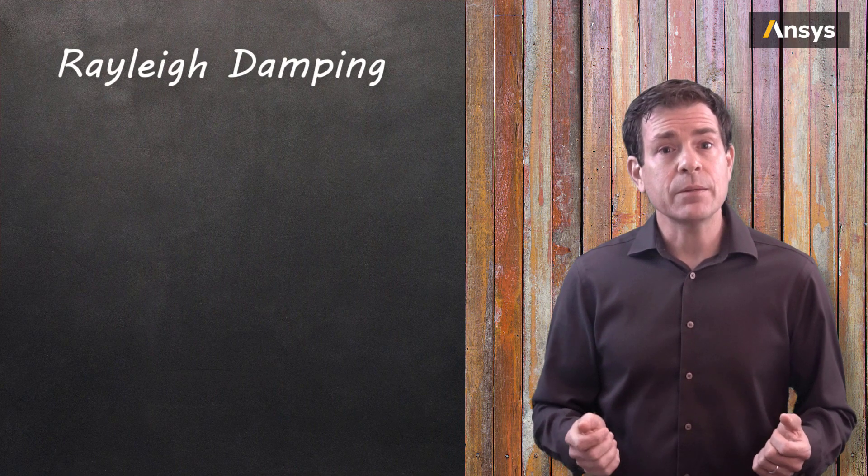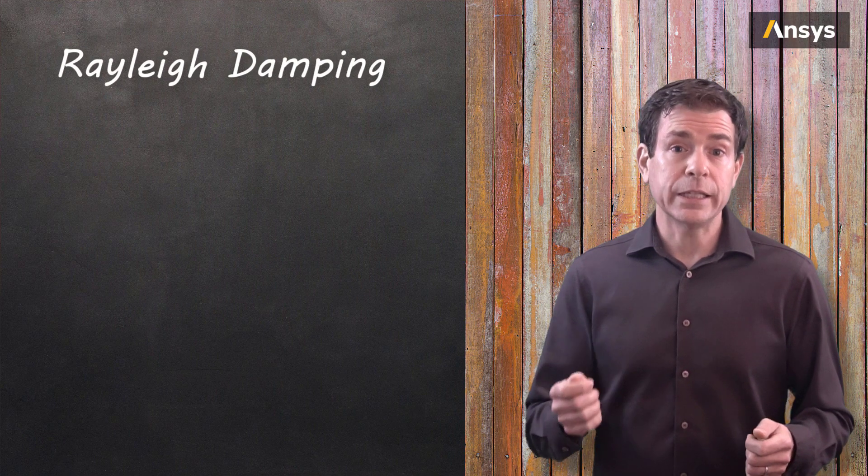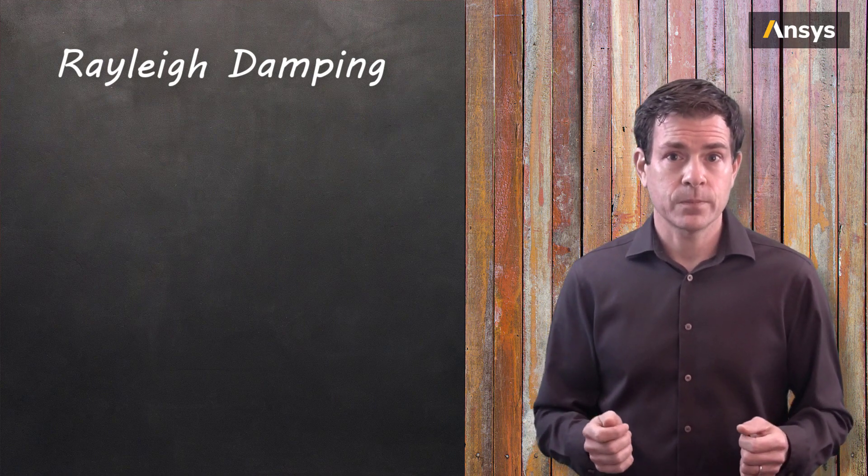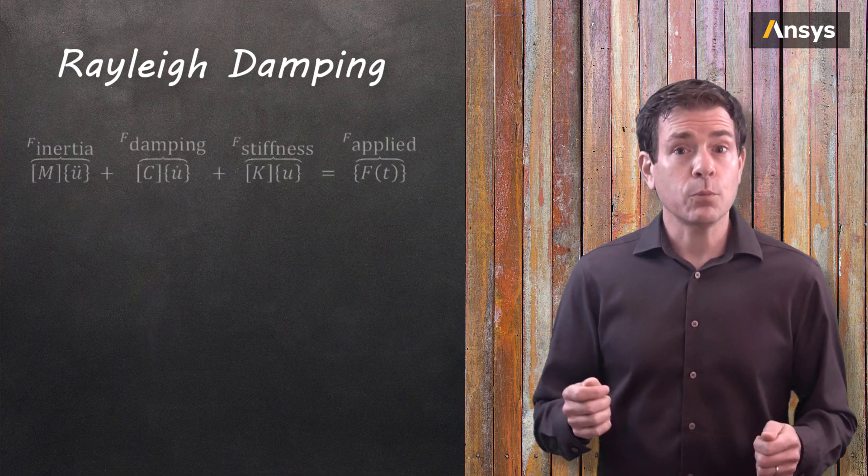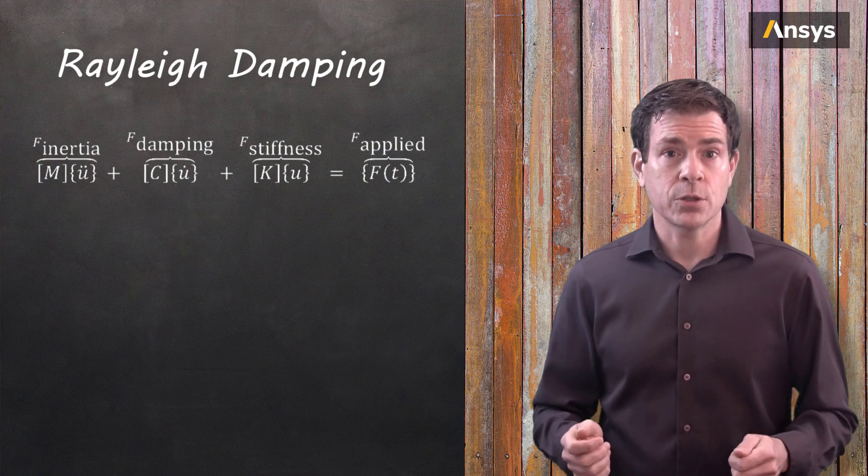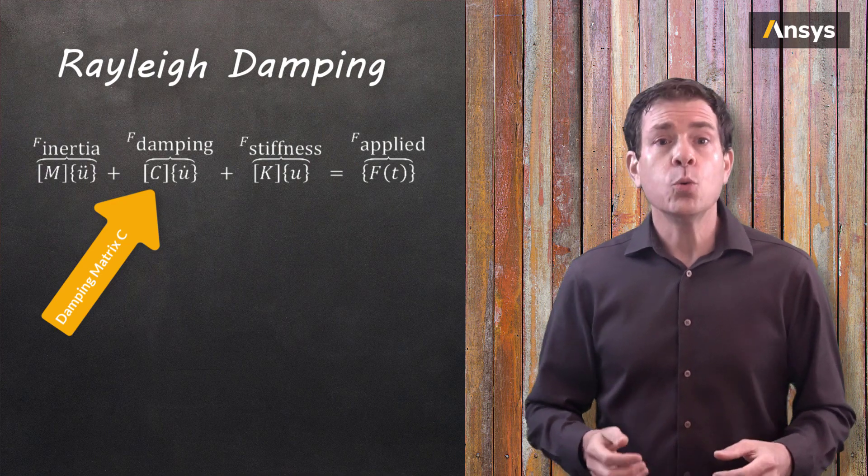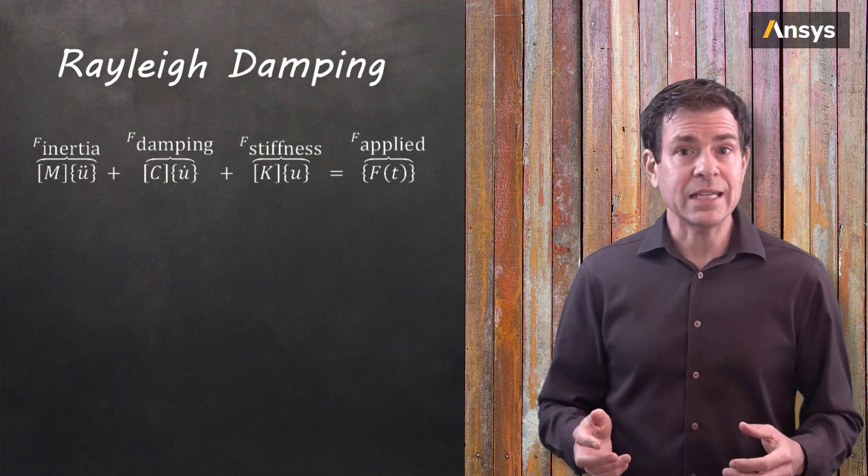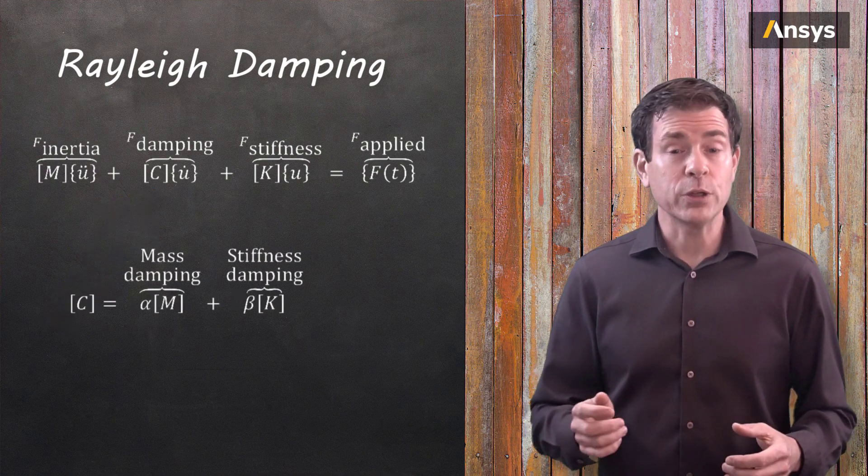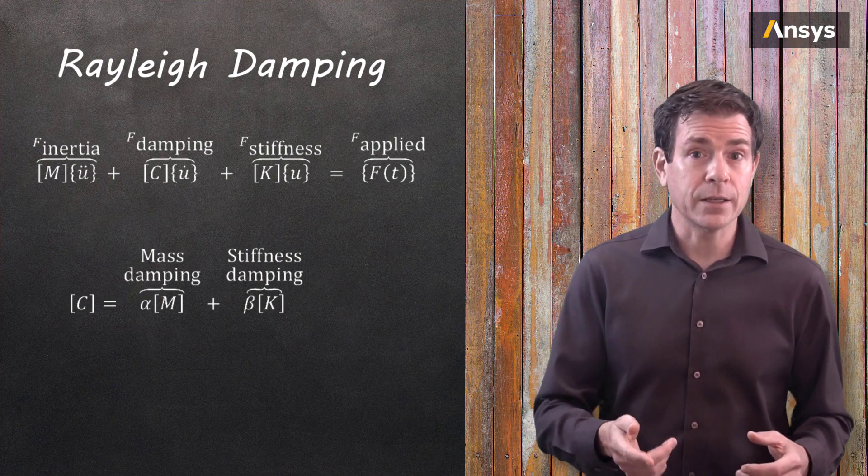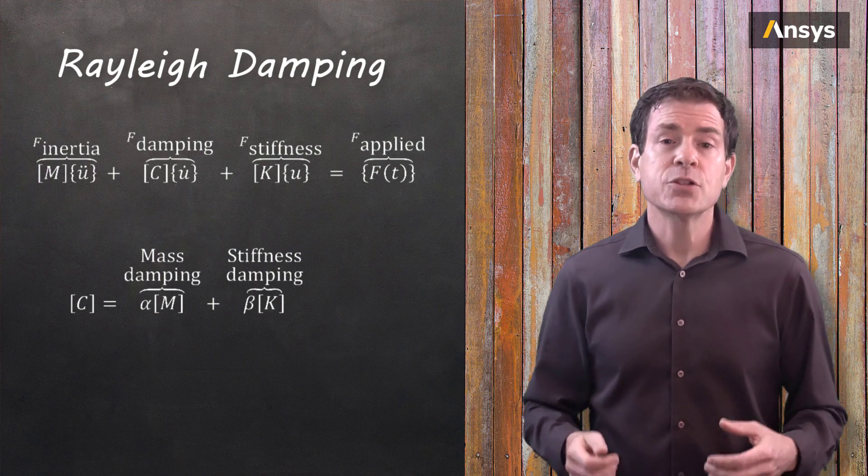Rayleigh damping is convenient mathematically because it is linear and proportional to the mass and the stiffness matrices. If we recall the general matrix form in the equation of motion, we wish to provide the damping matrix C to account for the damping of the system. We can assume that the damping matrix C is a linear sum of a real value alpha times the mass matrix plus a real value beta times the stiffness matrix.